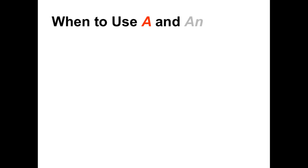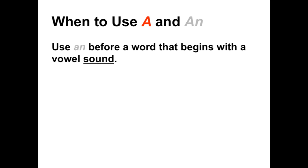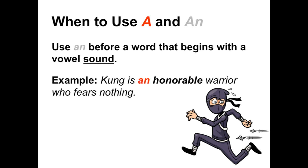So when do we use 'a' and when do we use 'an'? Well, we use 'an' before any word that begins with a vowel sound. Here is an example: 'Kung is an honorable warrior who fears nothing.' Since the word that comes after the indefinite article is 'honorable,' we use the indefinite article 'an.'